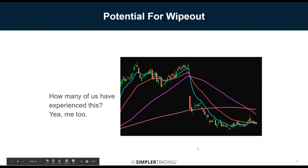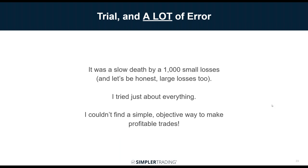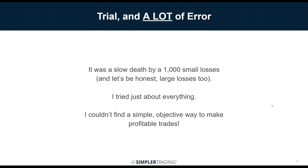Going back to that moving average question — this one looked great coming into the moving average, started going up, then just dropped. I've figured out a way to mostly avoid that. There was not enough precision in the squiggly lines — I had to find what didn't work in order to design something that did. It was death by a thousand small losses, and honestly some large losses too — all learning lessons, a bit of tuition. I tried just about everything and couldn't find a simple, objective way to make profitable trades.